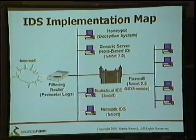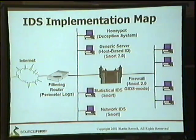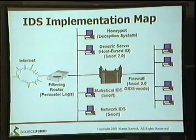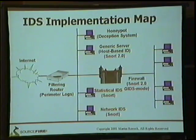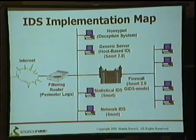Where does Snort go on your network? In the 1.x series, Snort can do statistical IDS and network IDS. In Snort 2.0, we're hoping to be able to do host-based intrusion detection as well as network-based IDS. Snort 2.0 will also have a gateway IDS mode so you can put Snort on the firewall directly and have it do active intrusion detection — dropping packets, sniping sessions in real time as they come through.